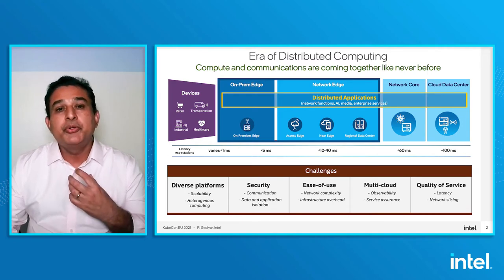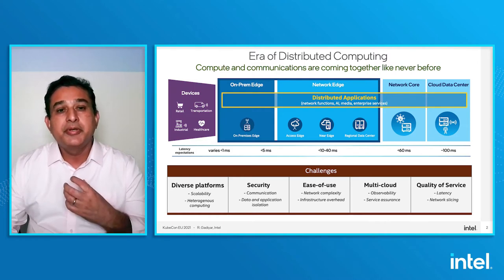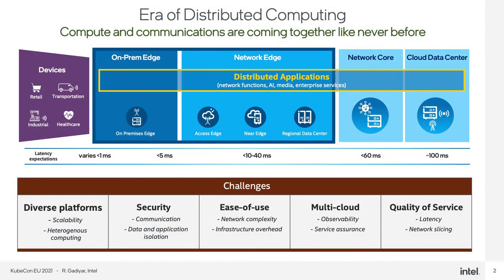While this distributed computing delivers significant flexibility, scalability, and TCO benefits for 5G and edge, it also brings some challenges. Edge clouds need to support heterogeneous infrastructure with accelerators, smart NICs, and GPUs. They need to support multi-tenancy, which means a larger attack surface, and hence security becomes paramount. As you disaggregate and deploy services across multiple edge and cloud locations, ease of deployment becomes a huge challenge, and you still have to deliver the desired quality of service for the applications.